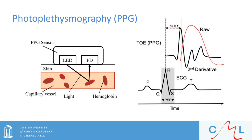Although not as common, we have also been experimenting with photoplethysmography, or PPG. PPG contains infrared sensors which detect hemoglobin. The red line depicts the raw PPG signal, and the black line — the second derivative — is used to identify the foot of the raw waveform. The bottom right shows a simultaneous ECG signal. We can then detect the speed at which the waveform travels from the heart to the PPG site.